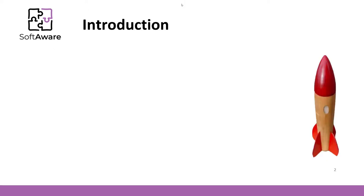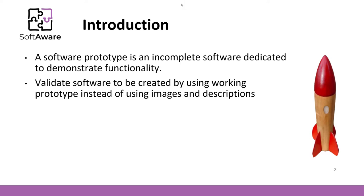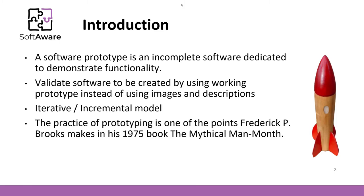To talk about software prototyping, we need to have a similar understanding of what a software prototype is. A software prototype is an incomplete software dedicated to demonstrating various aspects of the software, such as design, functionality, and others. The idea of prototyping is to validate software to be created by using a working prototype instead of using images and descriptions. The prototyping software development model is an iterative incremental model, where software is created iteratively as a whole or in small increments. The prototyping practice appears in the famous book of Frederick Brooks, 'The Mythical Man-Month', released in 1975.